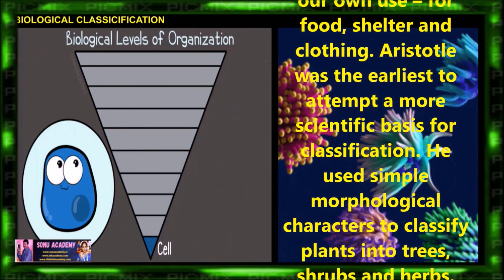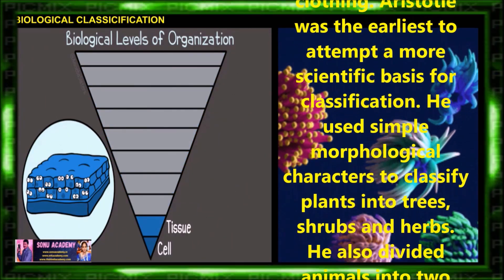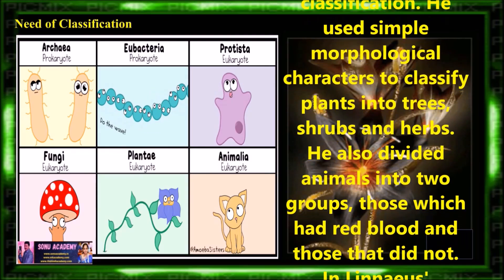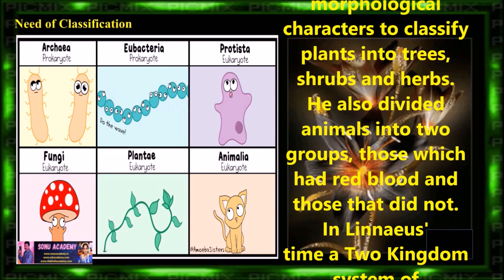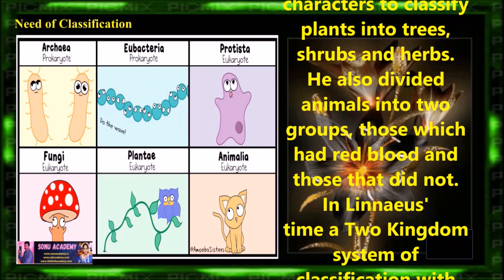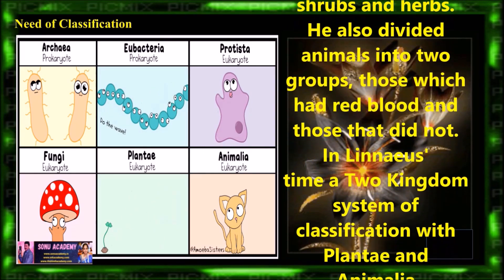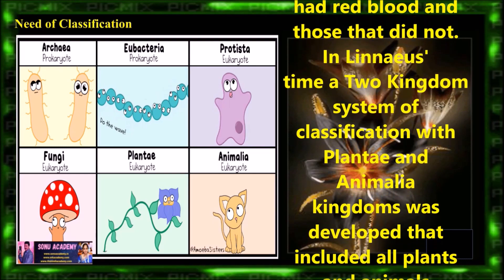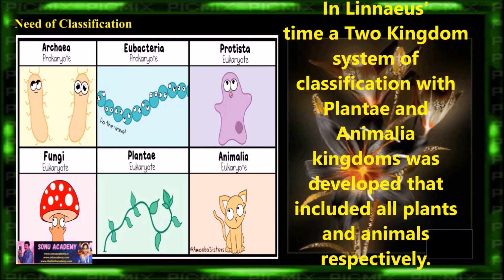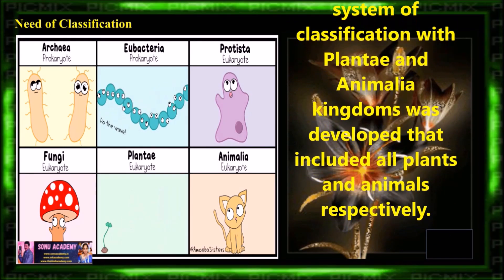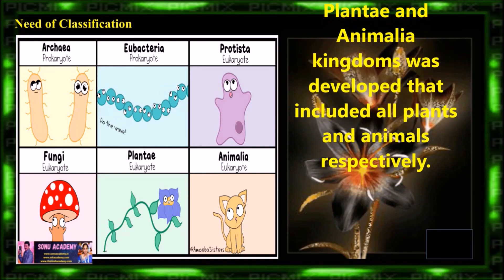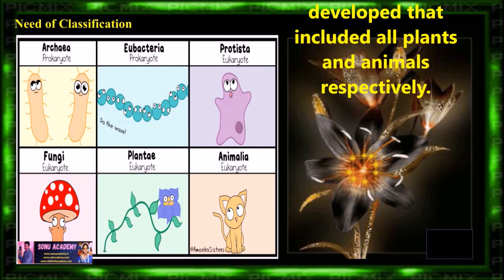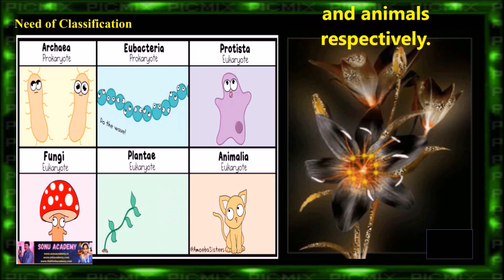Aristotle was the earliest to attempt a more scientific basis for classification. He used simple morphological characters to classify plants into trees, shrubs and herbs. He also divided animals into two groups: those which had red blood and those that did not. In later time, a two kingdom system of classification with Plantae and Animalia kingdoms was developed, including all plants and animals respectively.